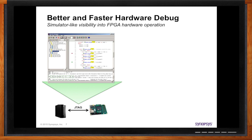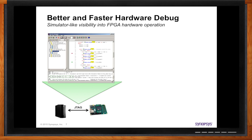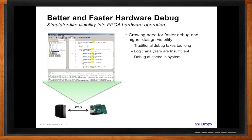We can't just push the bitstream to the board and hope it goes well. There is a growing need for faster debug as well as much higher visibility within the FPGA. We have a set of tools — Identify RTL Debugger — which works directly with Simplify and allows you to see all the values inside the FPGA and map them directly into the RTL, giving you a simulator-like environment directly from the FPGA.